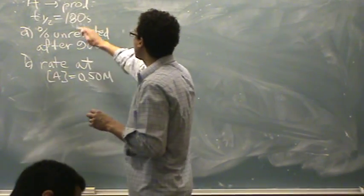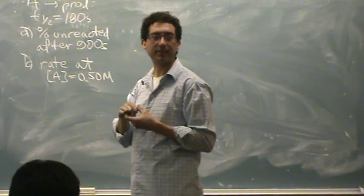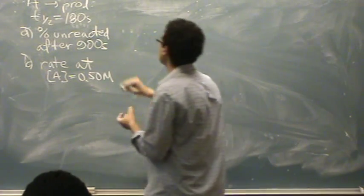Okay, so two parts. A goes to products, got the half-life. I want the percent unreacted after 900 seconds. So it's different than the previous problem, and in part B we'll do the rate.